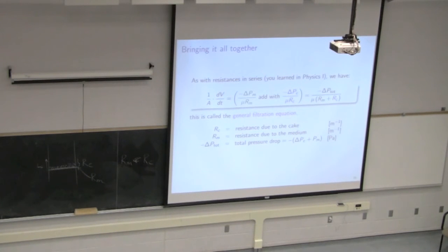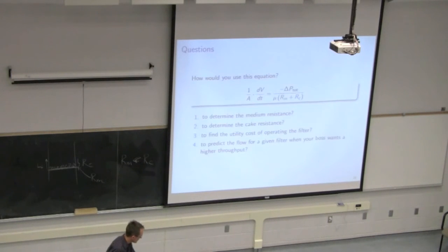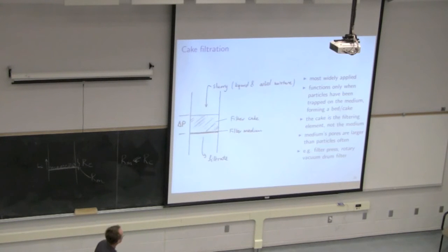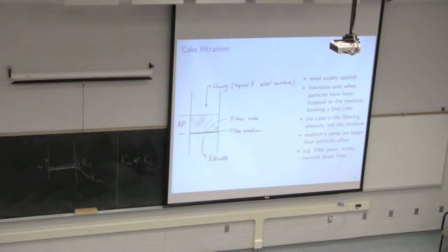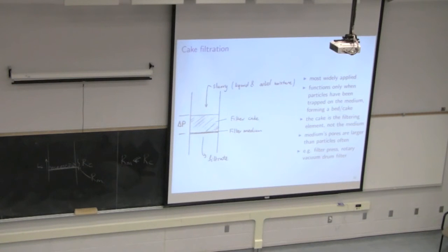Last class we summed up those two resistances in series and arrived at: the total pressure drop equals the flux times the viscosity times the sum of the two resistances RC and RM. If RM is much smaller than RC, that simplifies substantially. The most common filter you'll encounter is what's called cake filtration, which is very descriptive — it's the cake that's actually doing the filtering, not the medium.